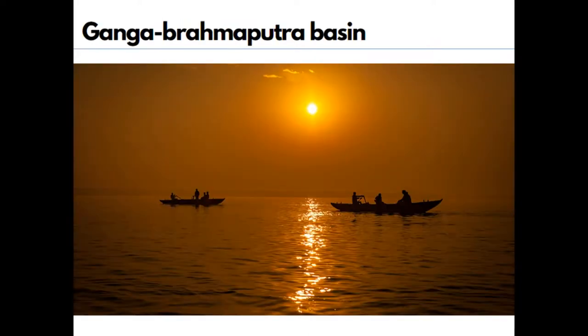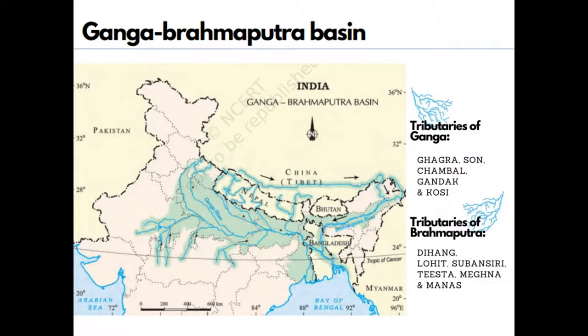Another river basin we are going to study in this chapter is the Ganga-Brahmaputra basin. This basin is in the Indian subcontinent and lies in the subtropical region of the earth, between 10 degrees north and 30 degrees north latitude. The major tributaries of the river Ganga are Ghagra, Son, Yamuna, Chambal, Gandak, and Koshi. Some major tributaries of the river Brahmaputra are Dihang, Lohit, Subansiri, Teesta, Meghna, and Manas.